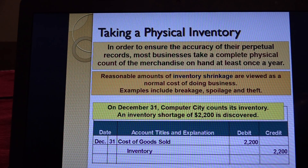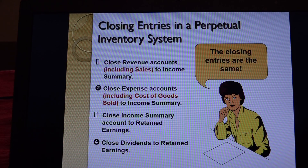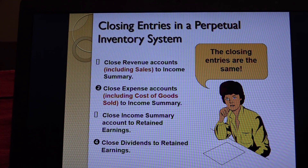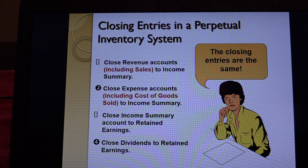Recall our closing entries: after we prepare our financial statements, closing entries in a perpetual inventory system are basically the same. When you close the revenue accounts to income summary, you include sales as a revenue. When you close expense accounts, you include cost of goods sold because it is an expense to income summary, and then you do steps three and four like you normally would.